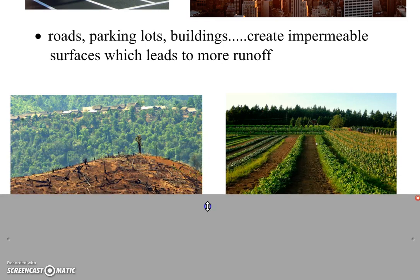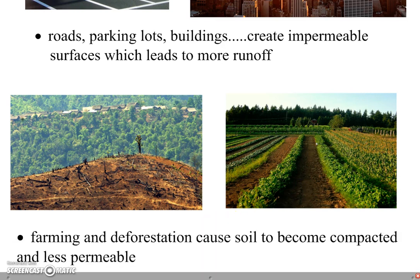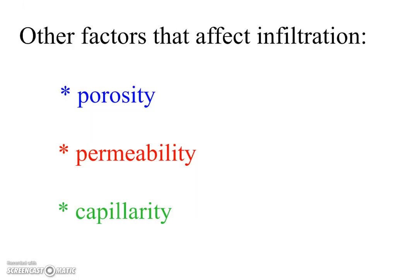Another way human land use affects infiltration is when we cut down forests — called deforestation — and when we grow crops on farms. These activities cause the soil to become more compacted and tight, so water is less able to get into it. Farming and deforestation create less permeable surfaces, so less water can infiltrate and you get more flooding. There are several other important factors that affect infiltration that we'll look at in other videos and spend time on in class: porosity, permeability, and a process called capillarity. See you tomorrow.